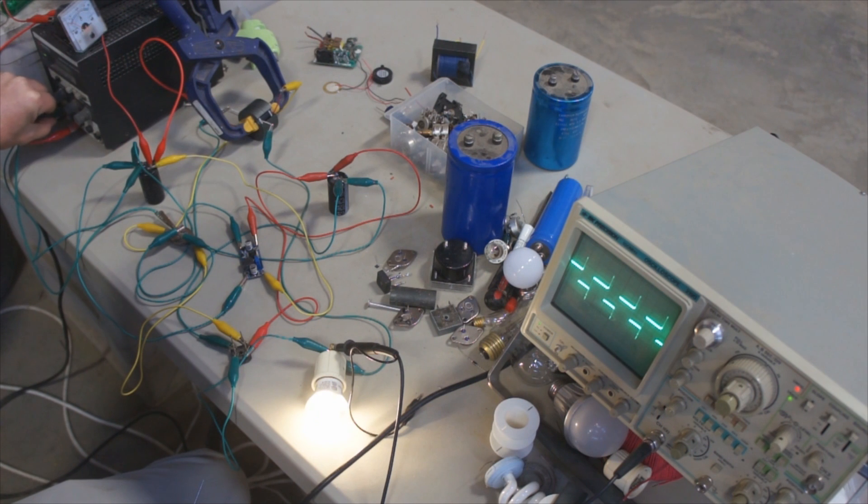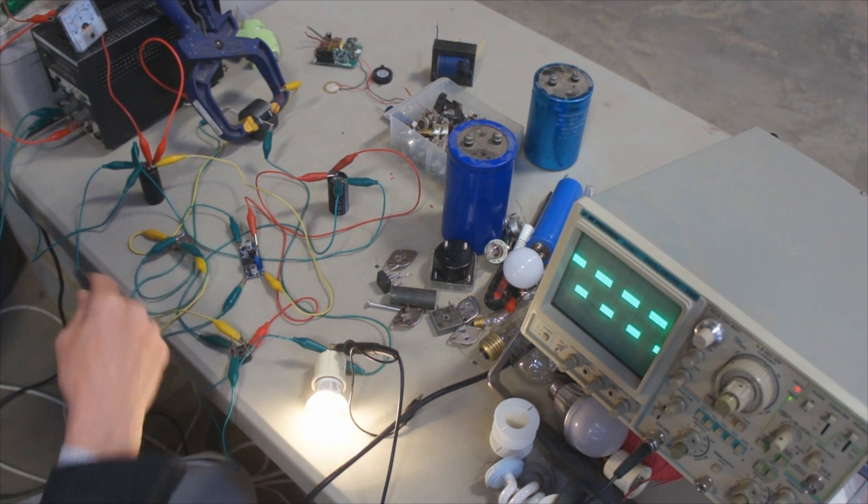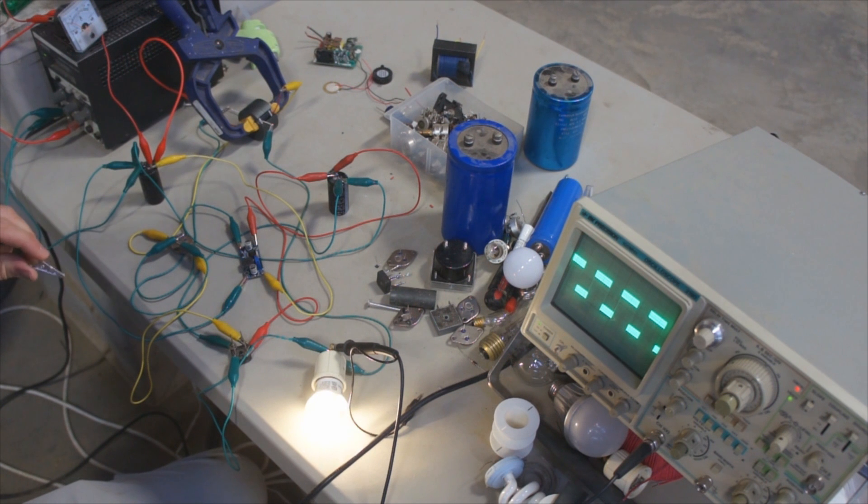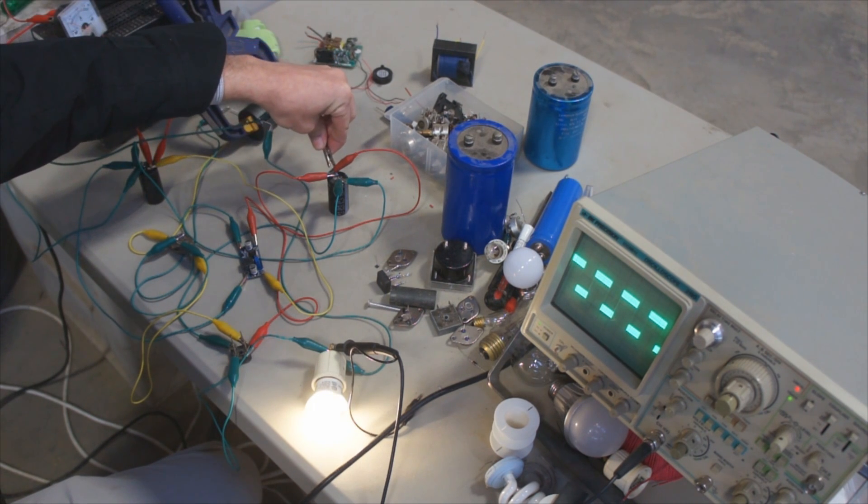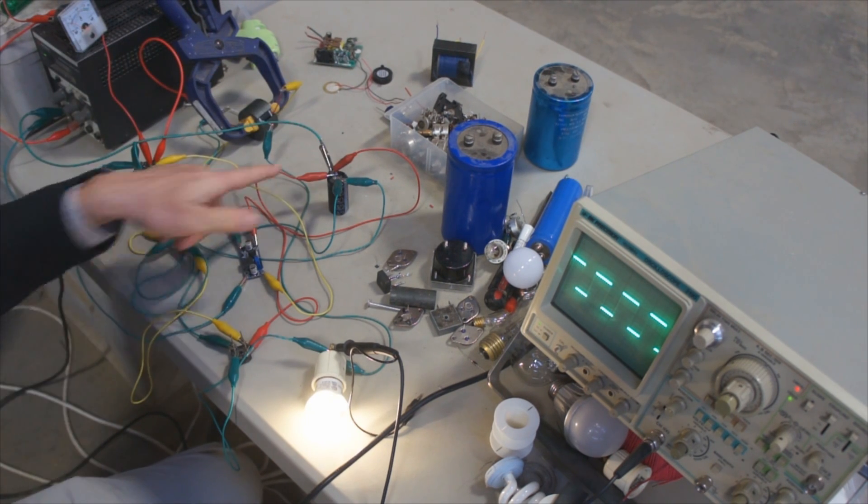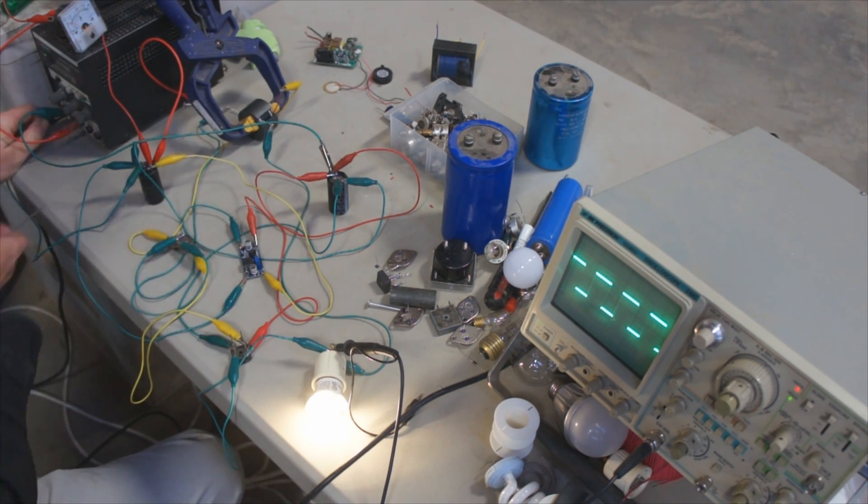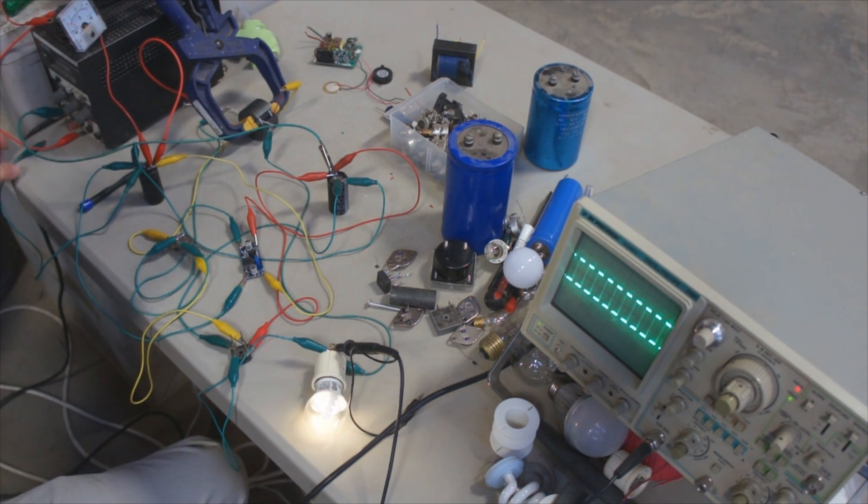One other thing I want to show here is I've got the ground connection connected to this transistor here, and this is one of the few circuits I've ever seen where grounding it at different points actually radically affects the run time. So to give an illustration, I'm going to ground to the positive here on the looping capacitor. So I'm grounded to the positive line now.